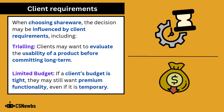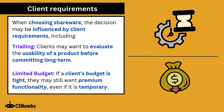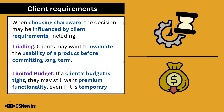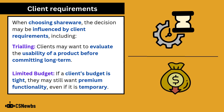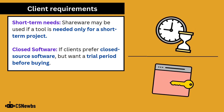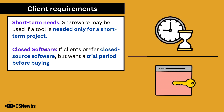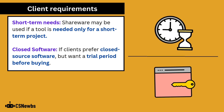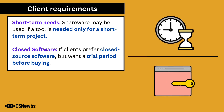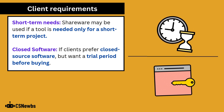When choosing shareware, the decision may be influenced by client requirements including trialing. Clients may want to evaluate the usability of a product before committing long term. Budget is also a factor — if a client's budget is tight, they may still want premium functionality even if it is temporary. If a tool is only needed for a short-term project, then shareware is ideal. A final client requirement is the type of software — many clients will prefer closed source software but may want a trial period before buying.